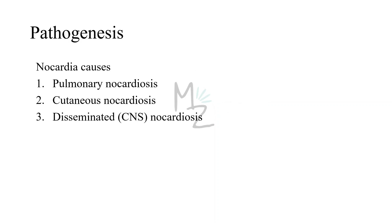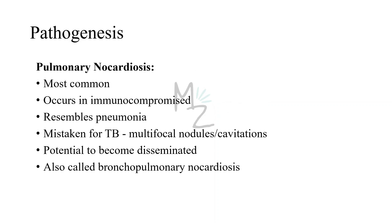The first type is pulmonary nocardiosis, related to infection of the lungs. The second is cutaneous nocardiosis, related to infection of the skin. Pulmonary nocardiosis is the most common type. It occurs in immunocompromised individuals and resembles pneumonia, since both attack the lungs with the same signs and symptoms. Pulmonary nocardiosis is often mistaken for tuberculosis because the multifocal nodules or cavitations of TB resemble those of pulmonary nocardiosis.